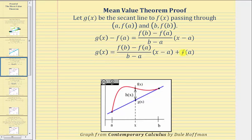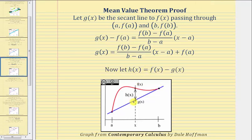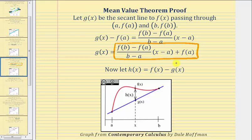Next we'll introduce a new function h of x, where the output is going to be the vertical distance between f of x and g of x. Notice that h of a equals zero because the vertical distance between f of x and g of x is zero at this endpoint, and h of b also equals zero because the distance between the two functions is zero there. So we let h of x equal f of x minus g of x, and now we'll perform a substitution for g of x, since g of x equals the slope of the secant line times the quantity x minus a plus f of a.